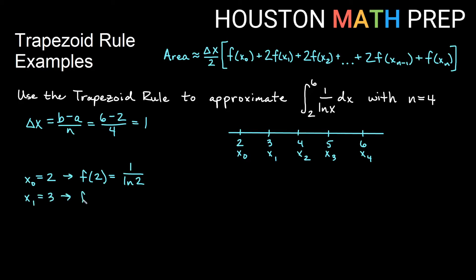We will have x₁ equal to 3. If we plug that in, we will get f of 3 is 1 over ln of 3. If we plug in x₂, which is 4, then f of 4 will give us 1 over ln 4.